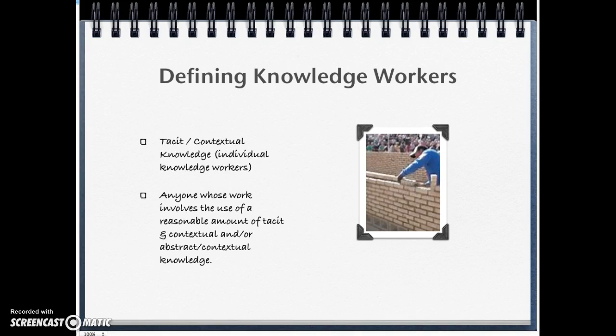If your organization deals with workers who use contextual knowledge, you have to evaluate the type of skills and learning environment those workers need in order to be successful and profitable. The book identifies these two schools of thought: explicit or theoretical knowledge workers, and tacit or contextual knowledge workers.